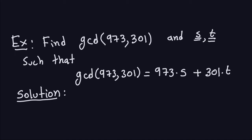I want to do two things. First, I want to find the GCD of those numbers — the greatest common divisor — and I also want to write down that greatest common divisor as a multiple of the first number, which is 973, plus a multiple of the second number, which is 301. So I have three things to find: the GCD, the number S, and the number T.